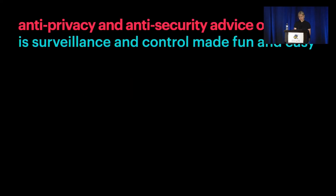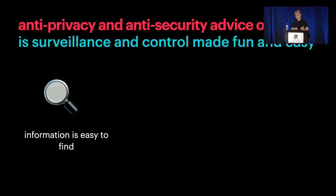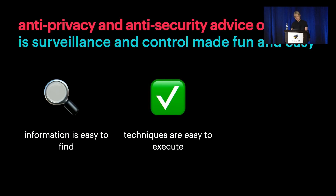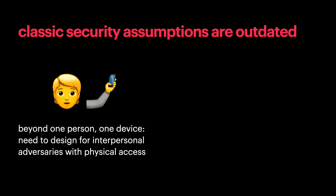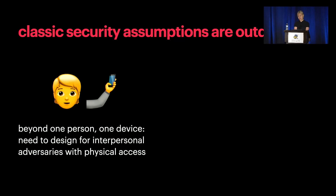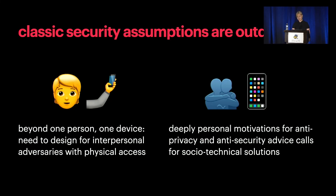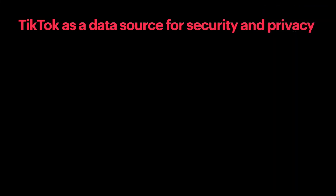Coming to the conclusion of this talk, our work shows that information on how to do surveillance and control is becoming more accessible. TikTok subcommunities are publicly producing advice on privacy and security-violating techniques that anyone can find. These techniques are accessible to people with little to no technical expertise, and the content is packaged in bite-sized viral video clips. Our work joins a growing community of security and privacy researchers critiquing classic assumptions. This work calls attention to interpersonal adversaries who might have physical access to their target's devices—a very realistic threat for many people—meaning research and design must think beyond one person, one device. The creators we observed had deeply personal motivations, which means simple technical solutions won't be enough. These creators were very creative in achieving their goals, so solutions will have to be designed with realistic user behavior in mind.